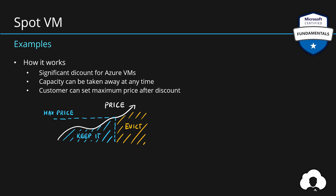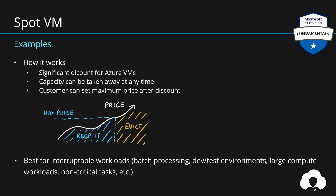So why would you purchase a spot virtual machine? It's really great for interruptible workloads. If you can create a service that takes advantage of spot VMs — for example for batch processing, dev/test environments, large compute workloads, or non-critical tasks — you can save a lot of money. Just remember these must be non-critical tasks because Microsoft can take those VMs back at any time when capacity is low. That huge discount might still make spot VMs very attractive.